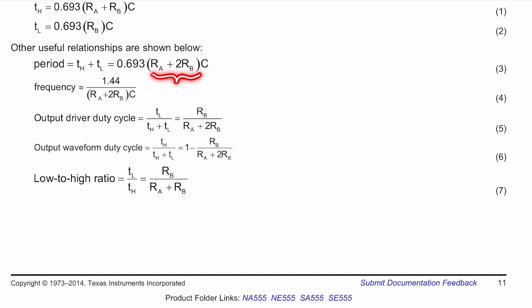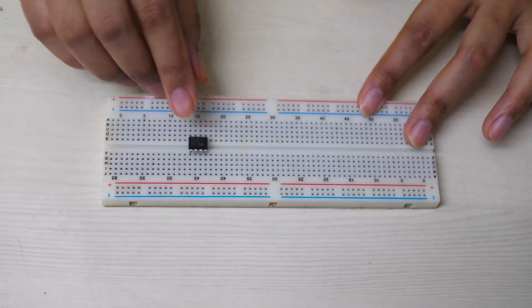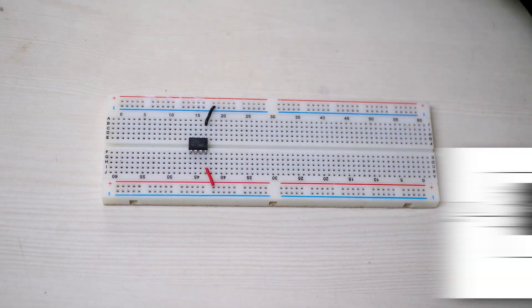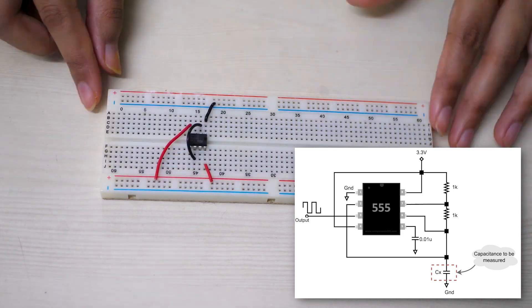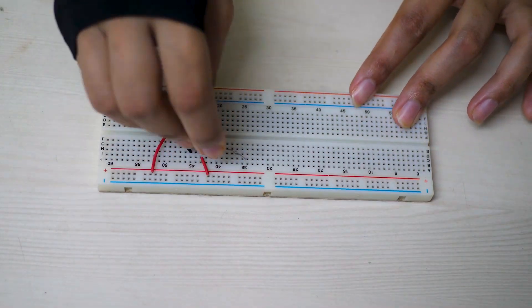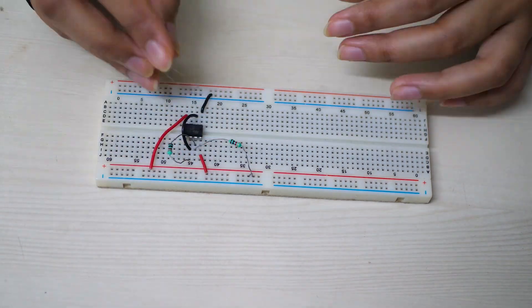So if I fix the resistance values in this configuration and measure the time period of oscillation I can get the unknown capacitance value that is the only unknown variable left in the equation. I am configuring the 555 timer in a stable mode of operation and going to verify that output is oscillating. Also that the time period of oscillation does changes with different value of capacitance.